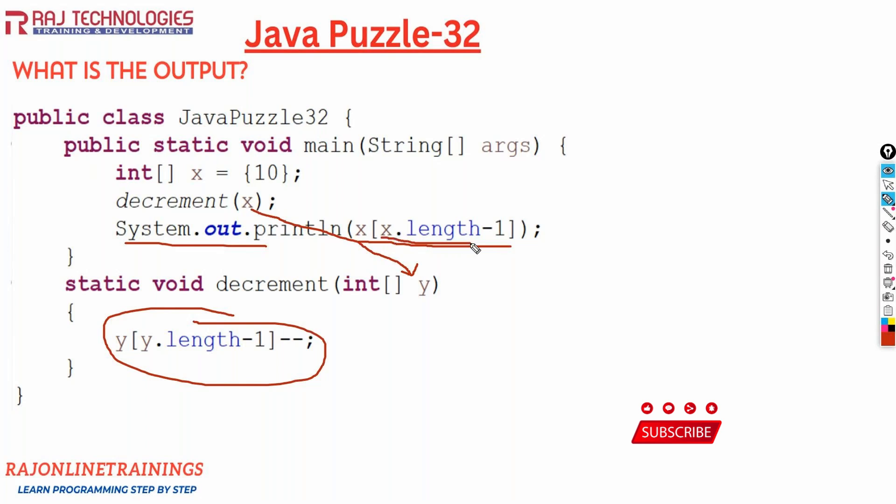So what is x dot length? X dot length is 1, 1 minus 1 is 0. So we are printing the x of 0 element. And here we are decrementing y dot length, which is 1, 1 minus 1 is 0. Again decrement. We are decrementing the value of this x array element.